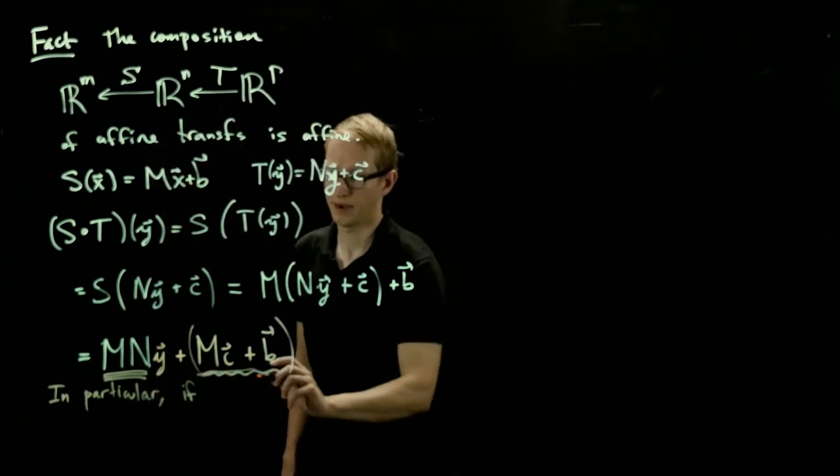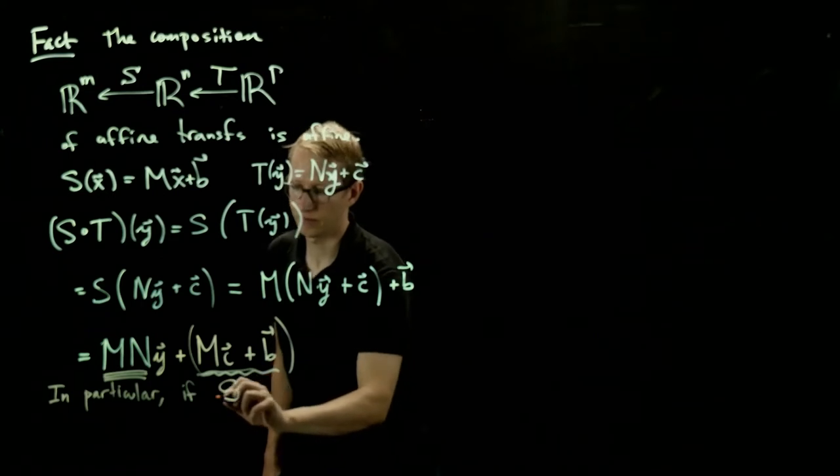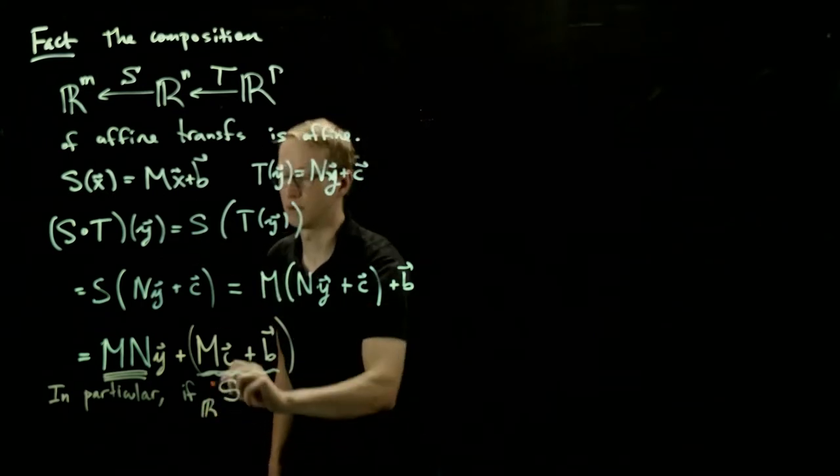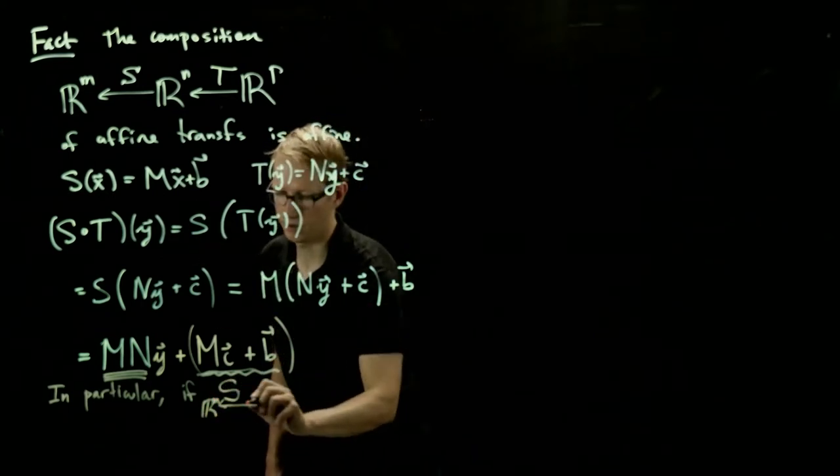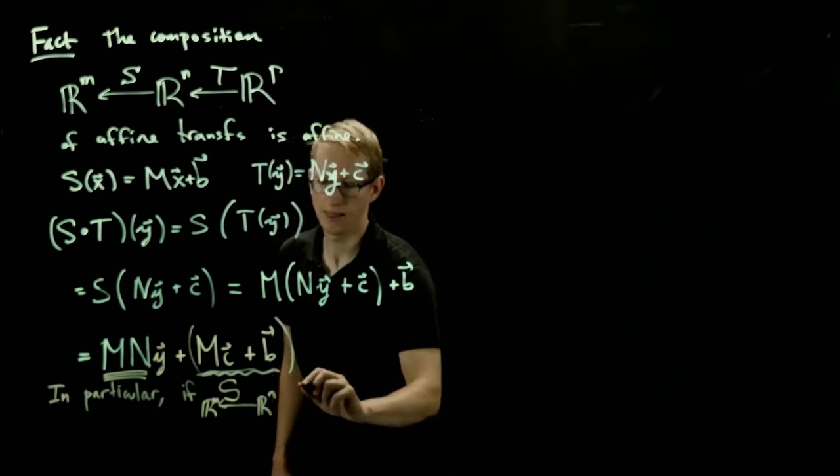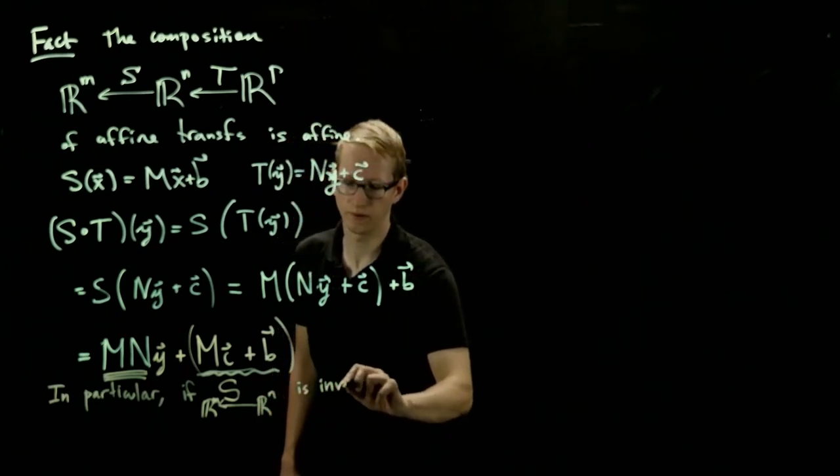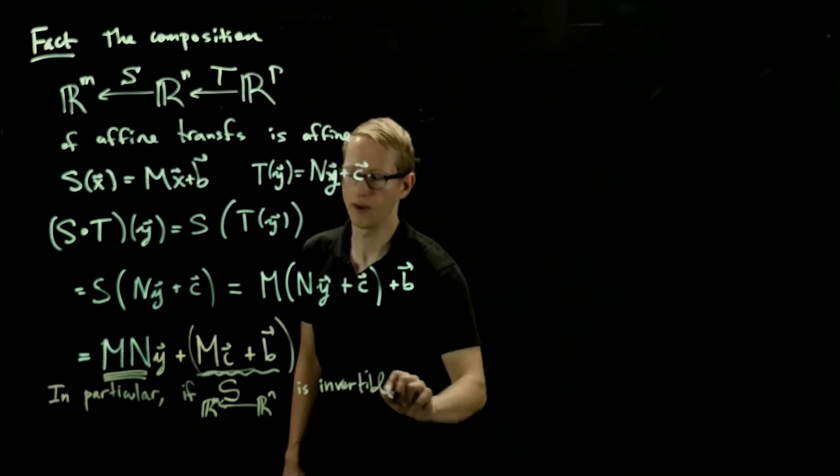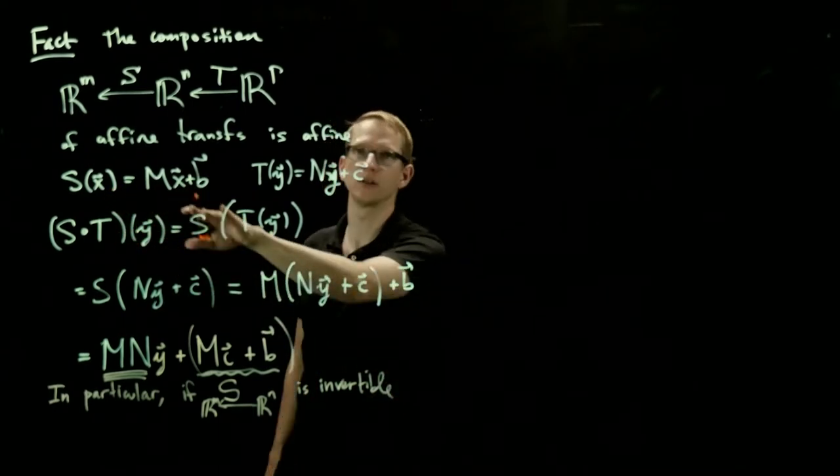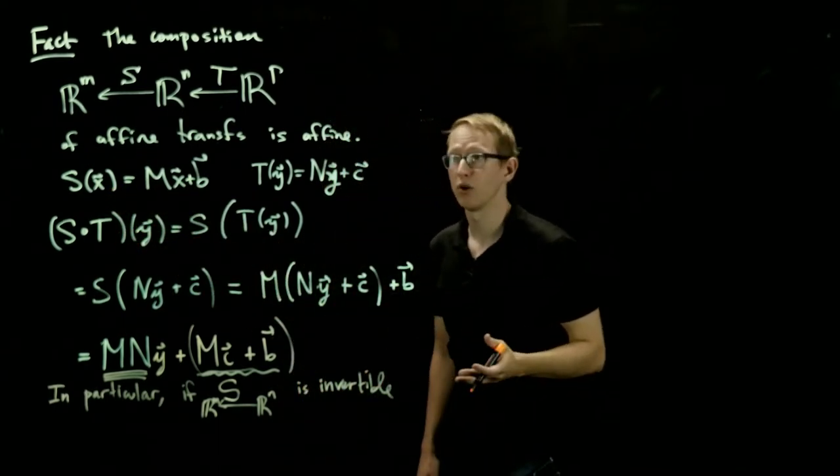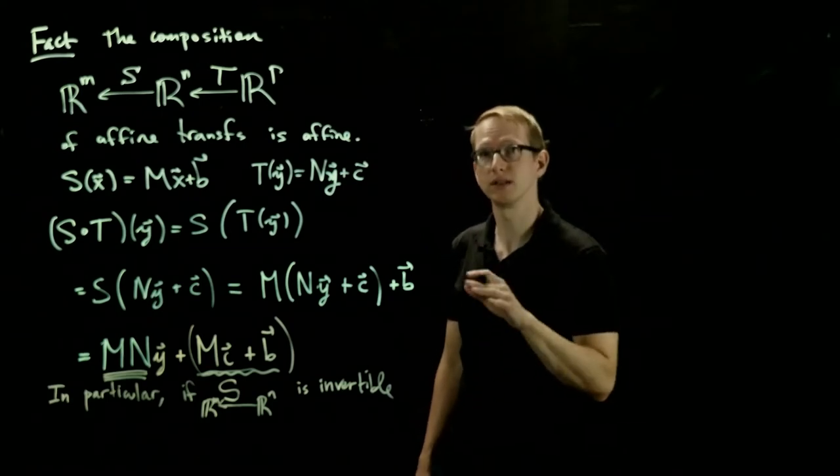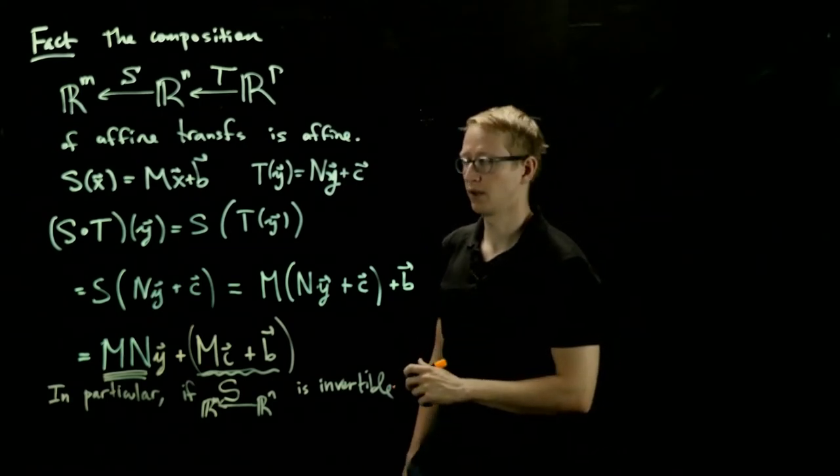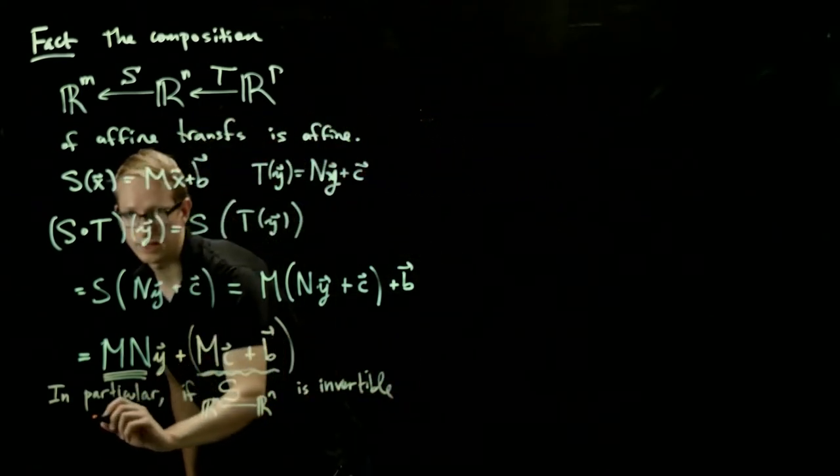And in particular, if S from Rn to Rm is invertible, and we wrote our decomposition like this, then we could ask, what are the matrices and vectors associated to the inverse of this matrix?